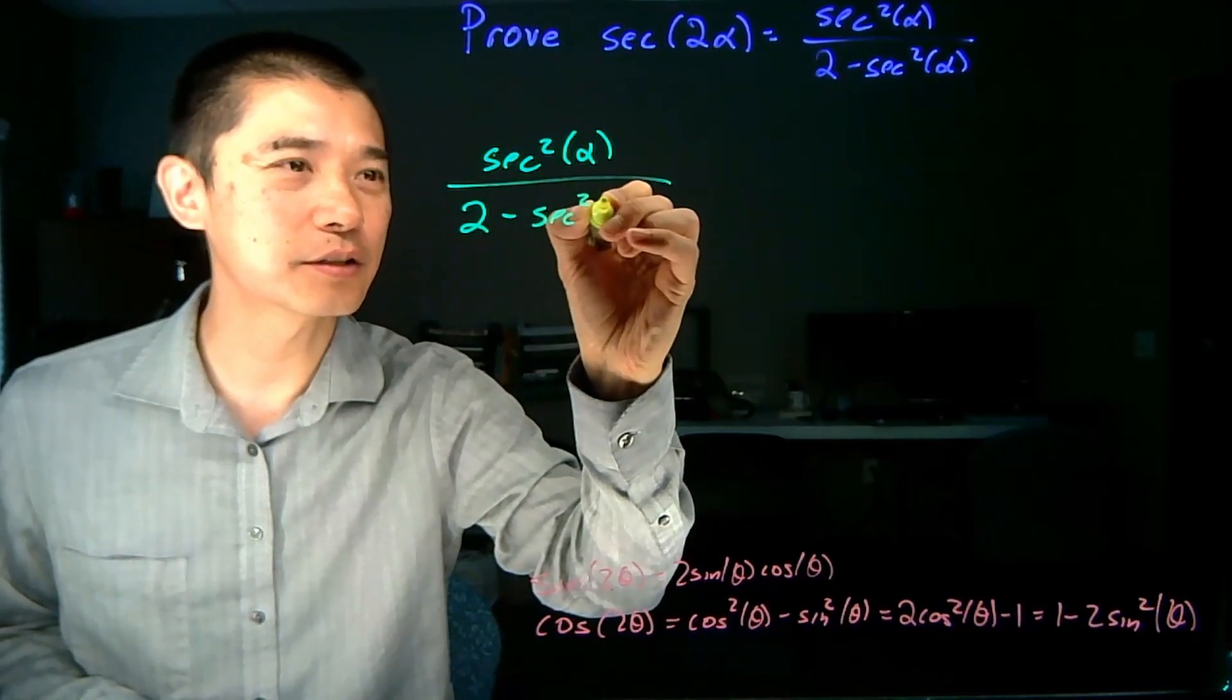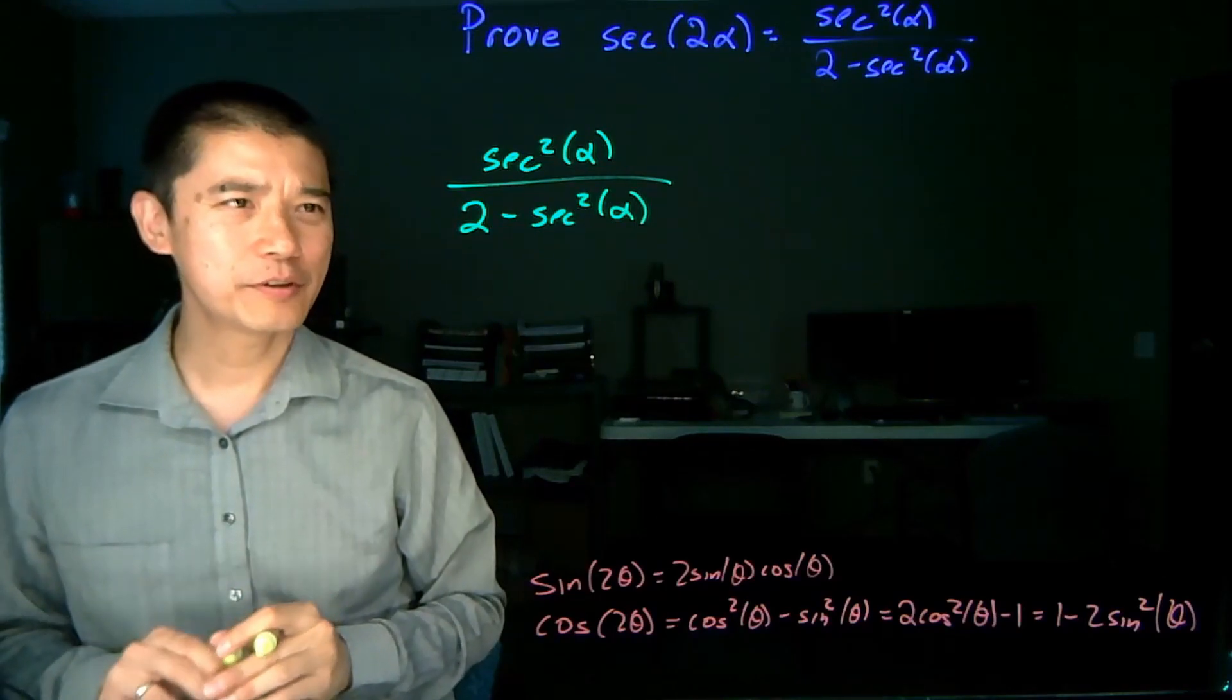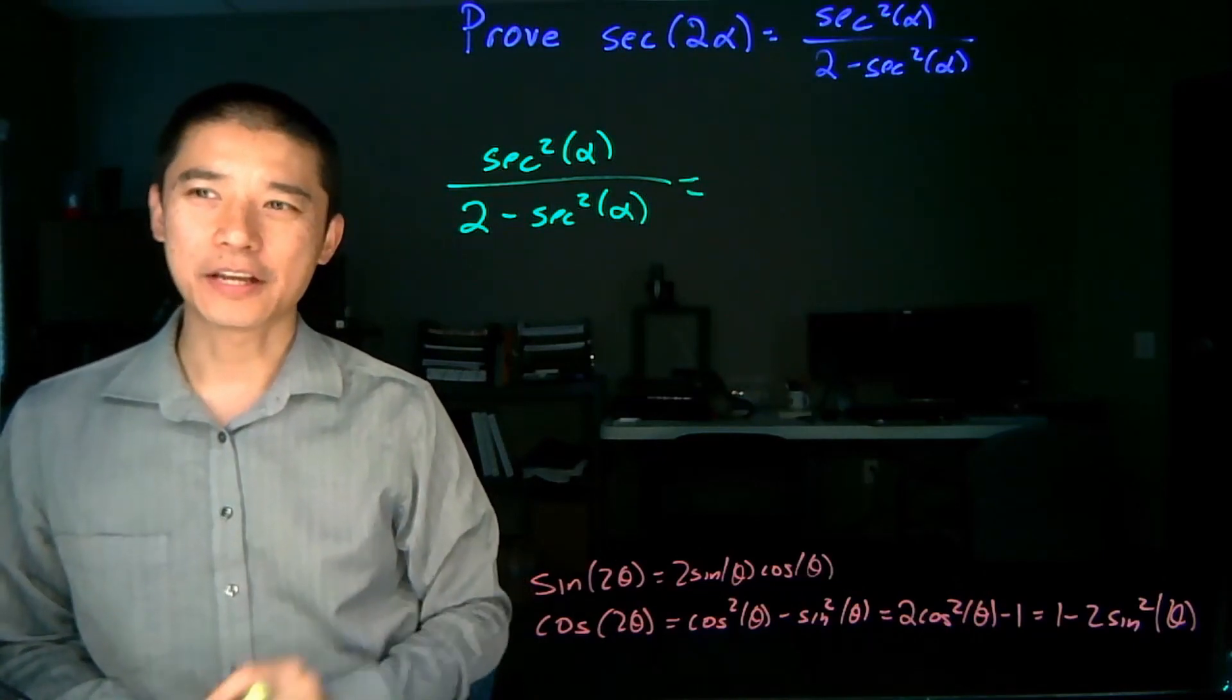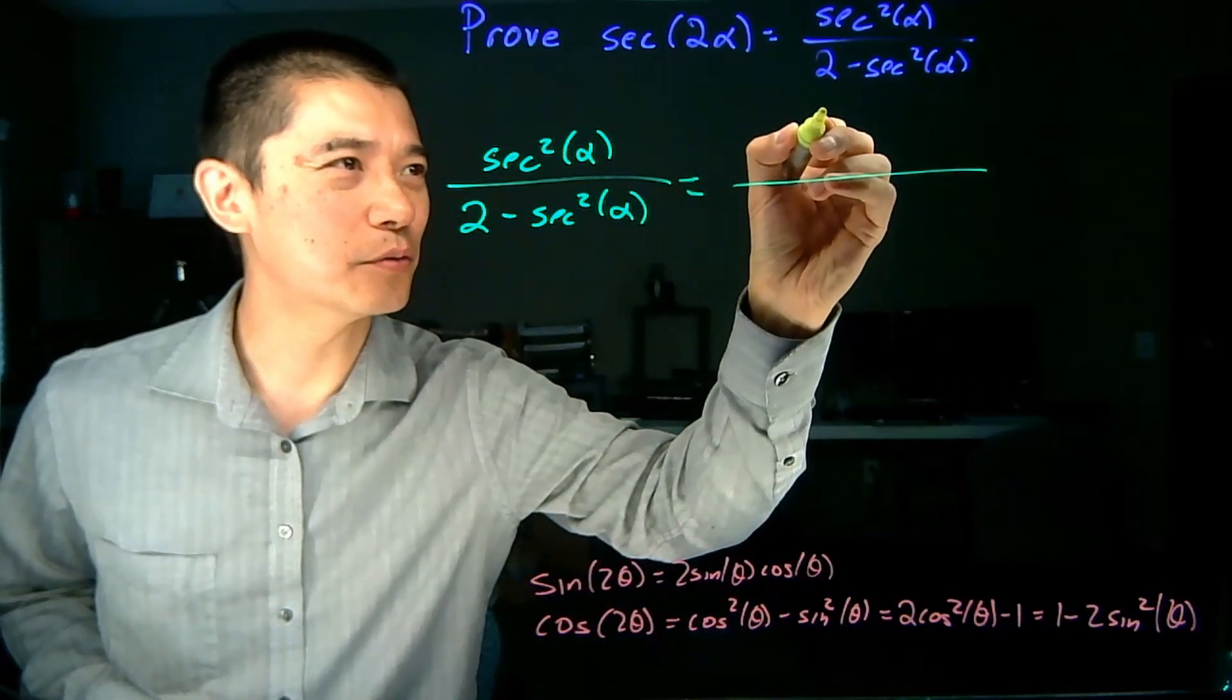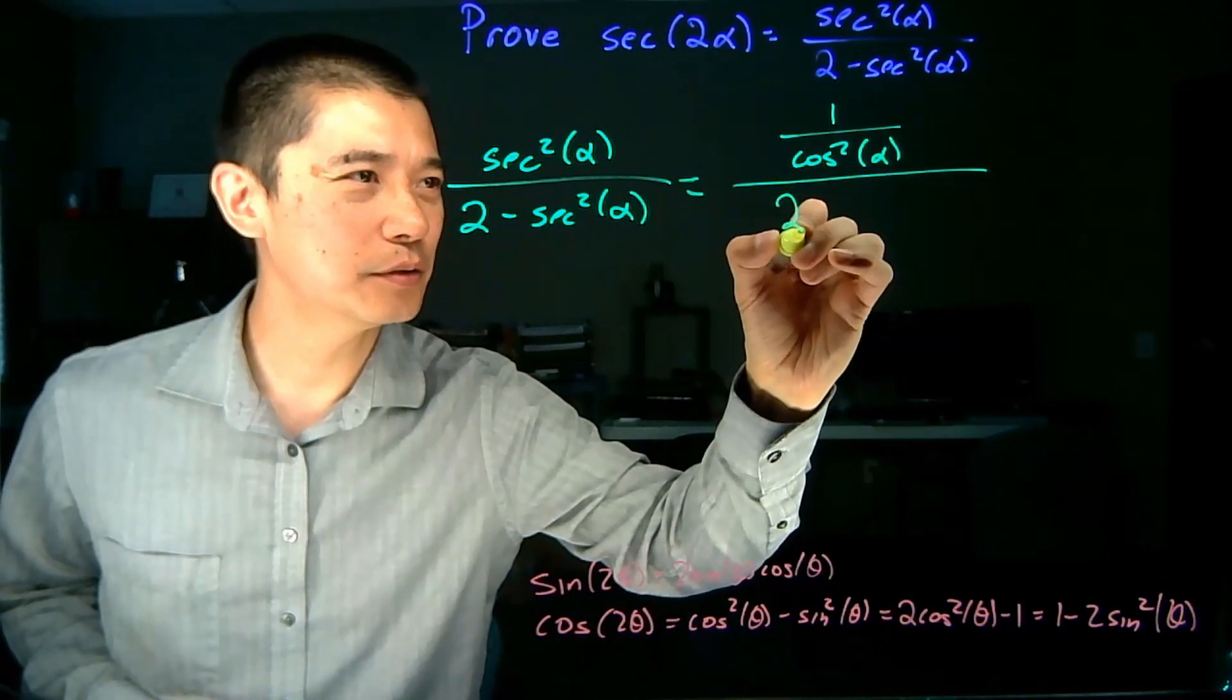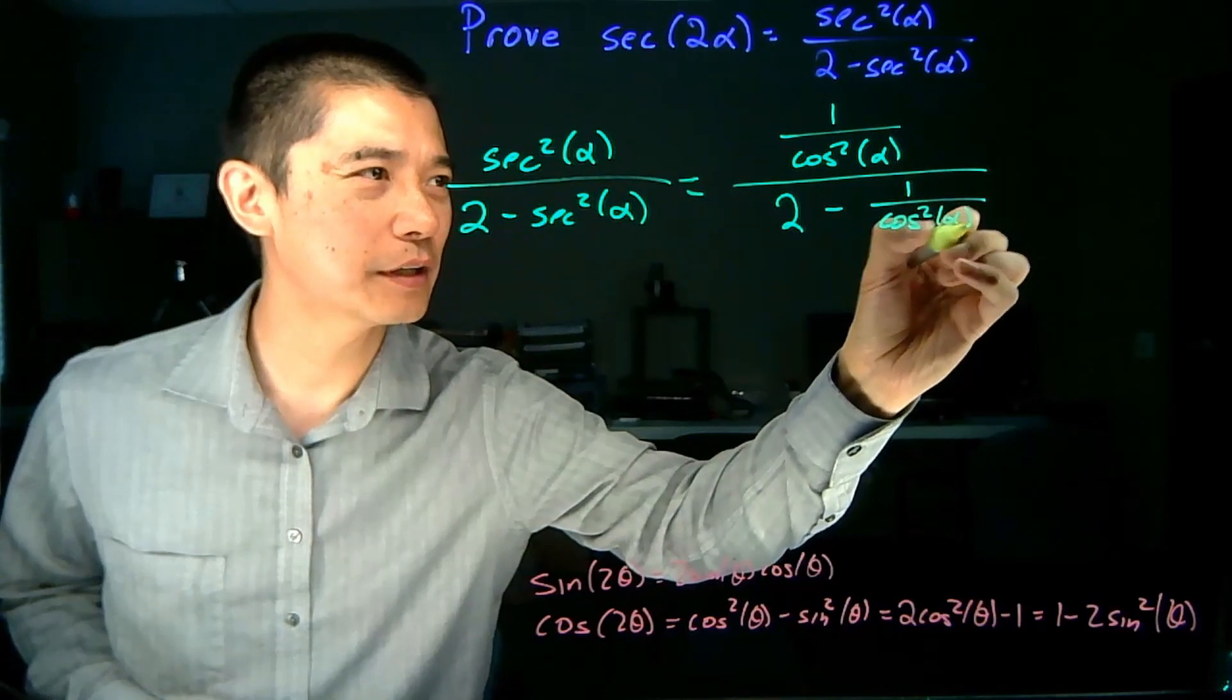It's a fraction with secants in the numerator and the denominator. So let's start there secant squared alpha over 2 minus secant squared alpha. Now the first thing to observe is that all these functions down here involve sines and cosines. And so writing this as secant is not going to help us move forward. So we need to rewrite all of this as cosines. So 1 over cos squared alpha over 2 minus 1 over cos squared alpha.